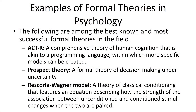Here are a few examples of more formal theories in psychology. ACT-R is a comprehensive theory of human cognition akin to a programming language within which more specific models can be created. Prospect theory is a very formal theory explaining how decision-making works under uncertainty. And the Rescorla-Wagner model is a theory of classical conditioning featuring an equation describing how the strength of association between unconditioned and conditioned stimuli changes when the two are paired. There are many formal theories in psychology and other sciences as well.